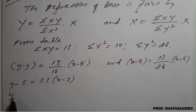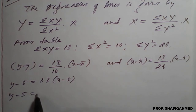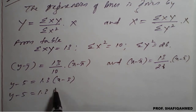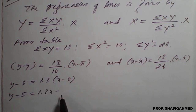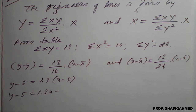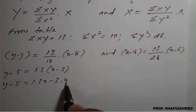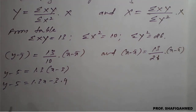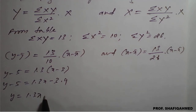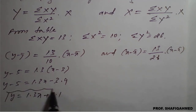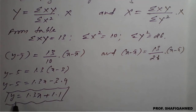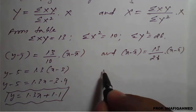So, X minus X̄ is 3 here. On simplification, Y minus 5 is equal to 1.3X minus 1.3 into 3, which gives 3.9. If you shift minus 5 to the right-hand side, Y is equal to 1.3X plus 1.1. So, this is the regression line Y on X.